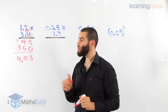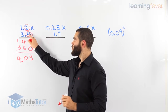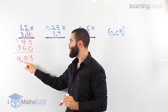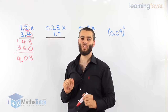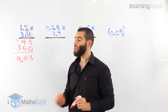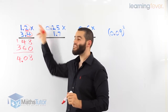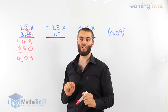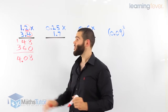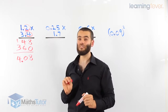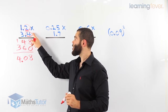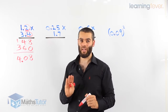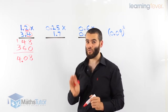So I repeat: two decimal places in the question, two decimal places in the answer. If there were three decimal places in the question, three decimal places in the answer. If there were five decimal places in the question, five decimal places have to go in the answer. That's the rule.